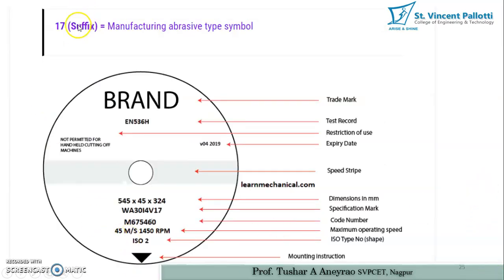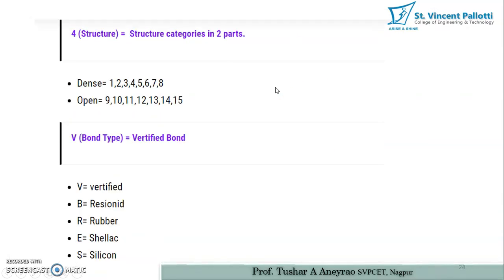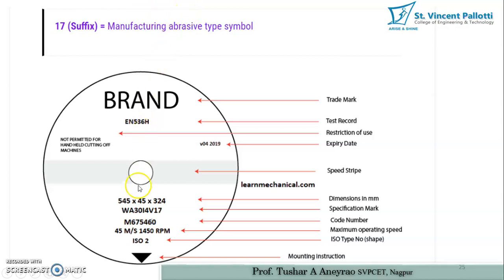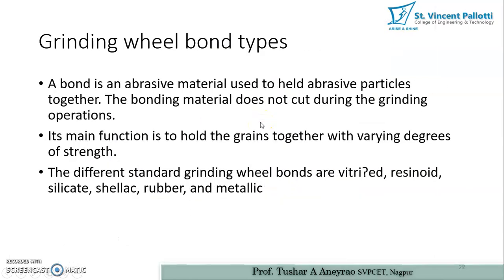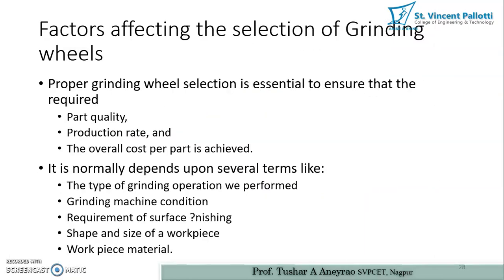The last part, 17, is the suffix for the manufacturer's abrasive type symbol. So W was the prefix for the manufacturer's abrasive type, and 17 is the suffix for the manufacturer's abrasive type.